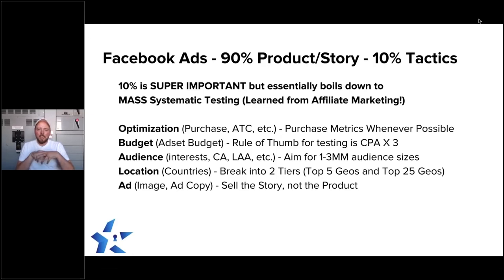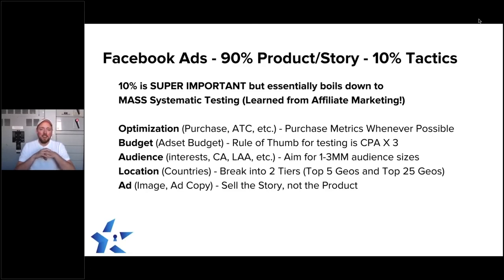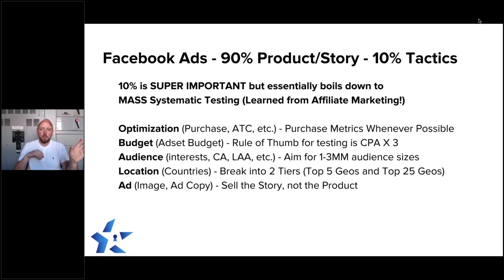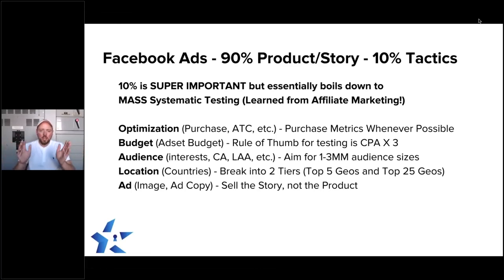On location: when I first started Facebook advertising for Isaac Training, I threw up ads and after about a week I realized I was getting amazingly cheap clicks, but they were all from countries where nobody bought my products — Nepal, for example. What we do now — and what Ben advocates — is break your campaigns into two tiers. Target your top five geos by GDP, or by where you know your target market is, and then your second tier is the next top 25 GDP countries or countries where you know your sales are coming from.